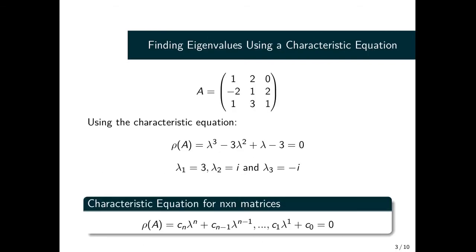First, let's understand something from the characteristic equation. Given this matrix that we have here, we can obtain our characteristic polynomial. We have λ₁ equal to 3, λ₂ equal to i, and λ₃ equal to negative i, which are the roots of the characteristic polynomial. We consider these to be the eigenvalues.